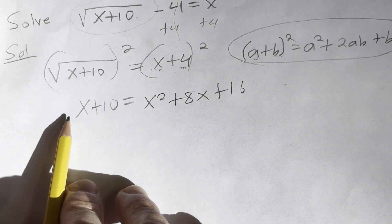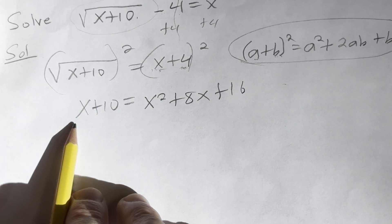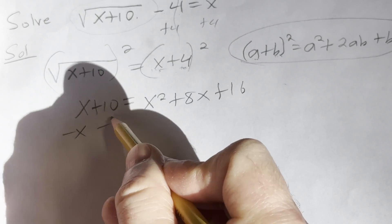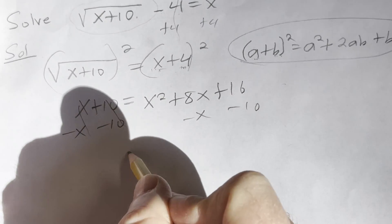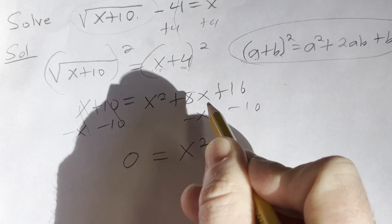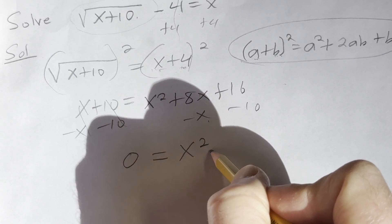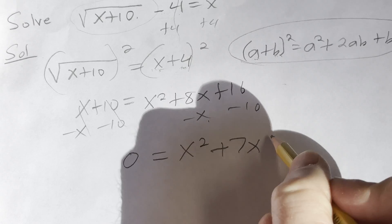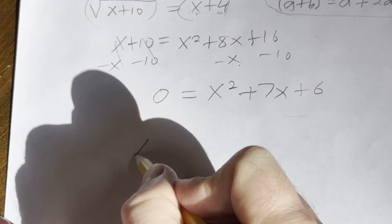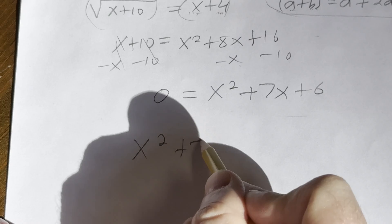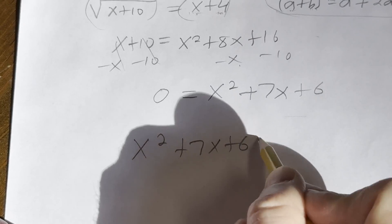All right, so let's go ahead and get rid of all this stuff here. So I'm going to subtract x, subtract 10 from both sides. So 0 = x² + 8x - x is 7x, so plus 7x, and then we have plus 6. I'm going to write it again, but with this on the left-hand side. So x² + 7x + 6 = 0.